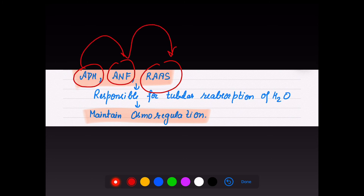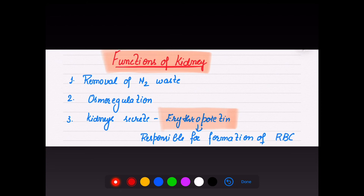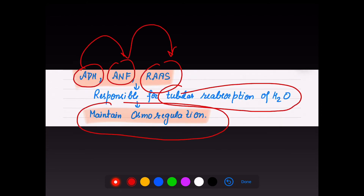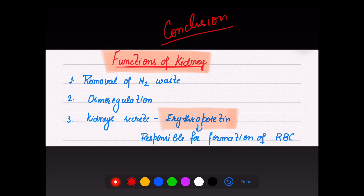So ADH, ANF, and the Renin-Angiotensin-Aldosterone System — these three systems must be clearly understood, because they are responsible for tubular reabsorption of water and are very helpful in maintaining osmoregulation in the kidney. This covers all three regulatory methods in the kidney under different conditions.